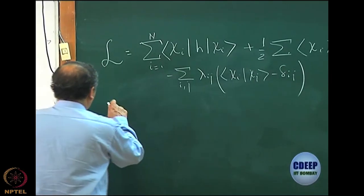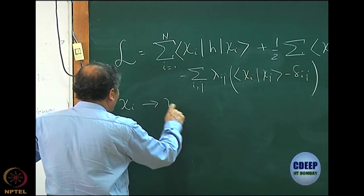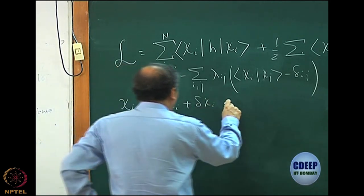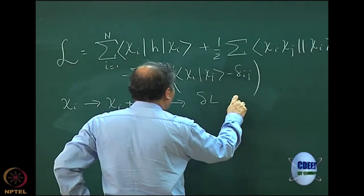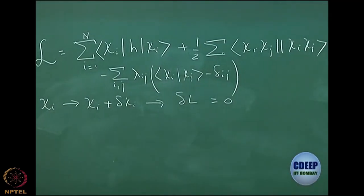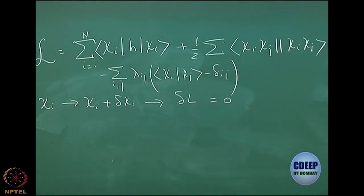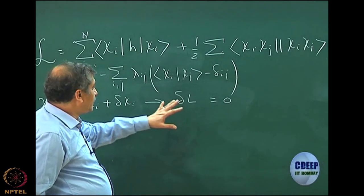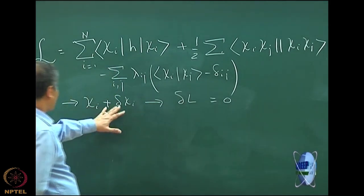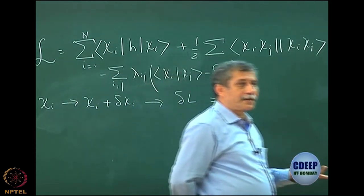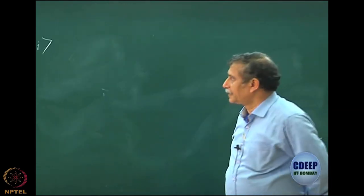We said that we vary each χᵢ to χᵢ + δχᵢ — an infinitesimal change — and we make the first-order change, which I call δL, equal to zero. That is basically ensuring the stationary condition. If I make a first-order change in the variable, the first-order change in the functional represents the derivative; putting it equal to zero means the derivative is zero.